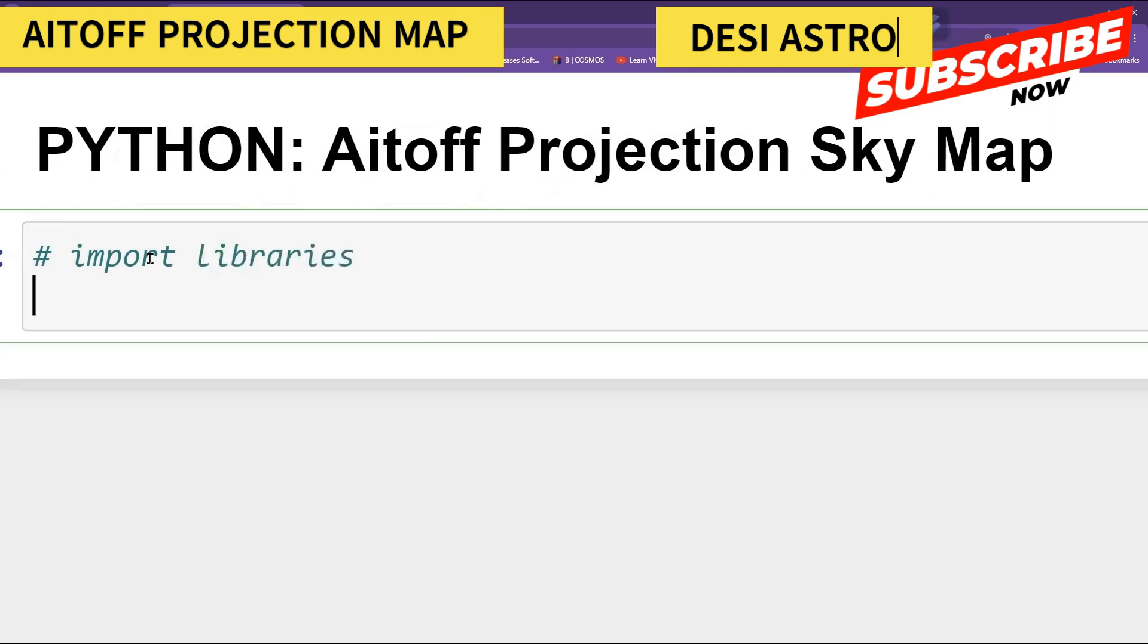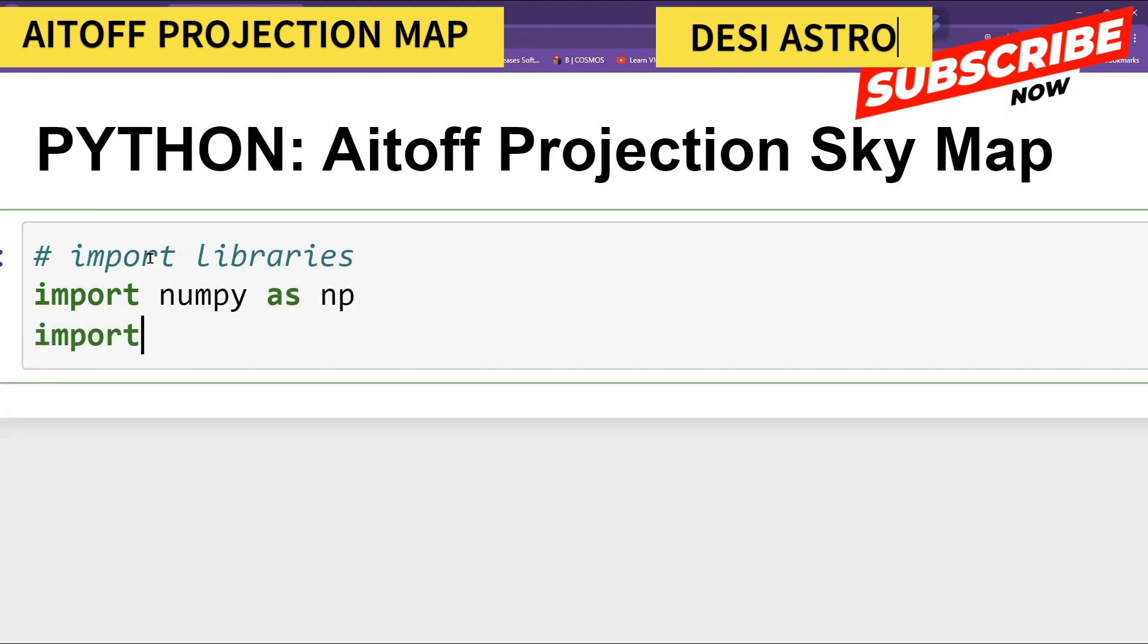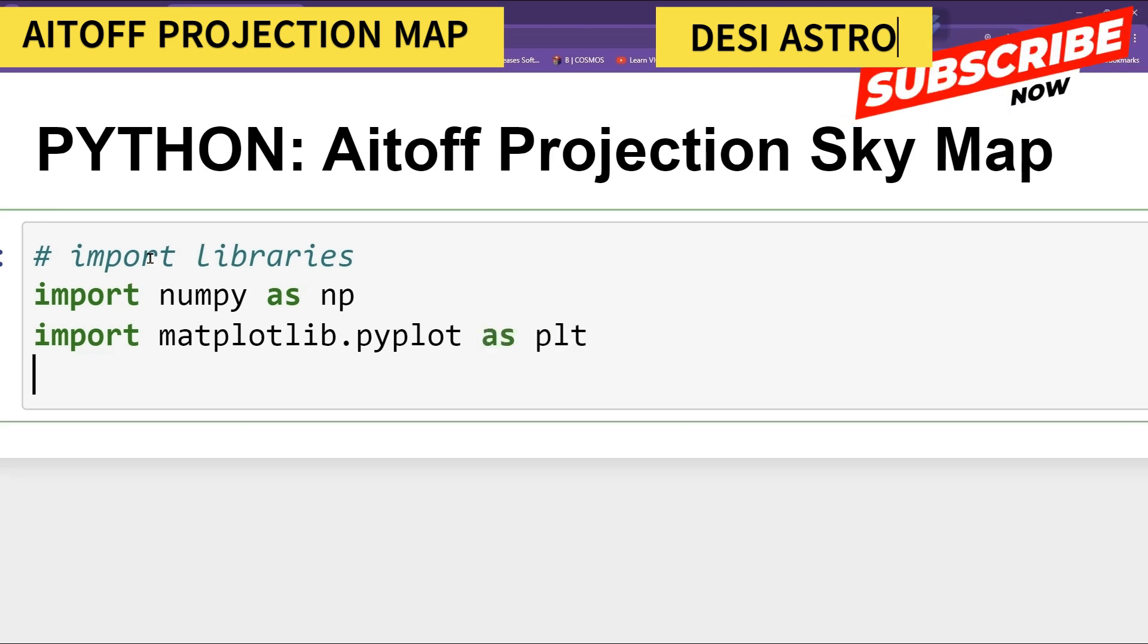Import numpy as np. Then you can import matplotlib for plotting, so pyplot as plt. And then I will import random module. So import random. This will take care of your array and number operations, this will take care of your plotting, and this will generate random numbers.